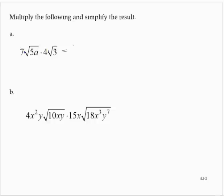So I'm going to rewrite this as 7 times 4 times the square root of 5a times the square root of 3. And so that's 28 times the square root of 5a times 3, 28 times the square root of 15a. The square root of 15a does not contain any perfect square factors, so it is simplified.